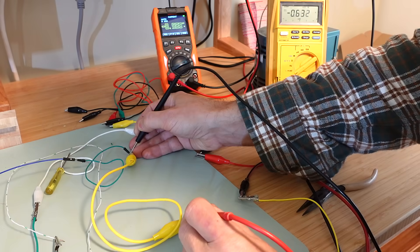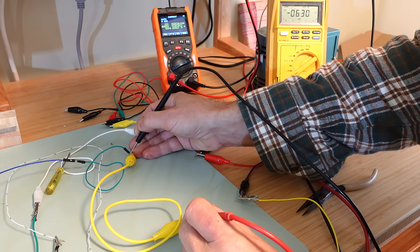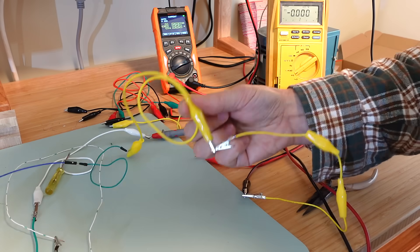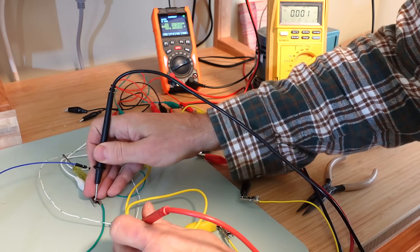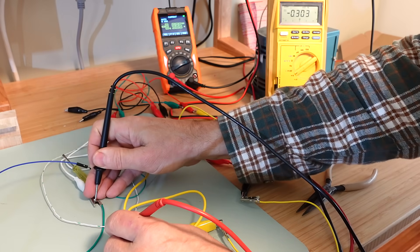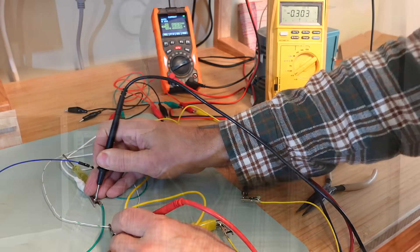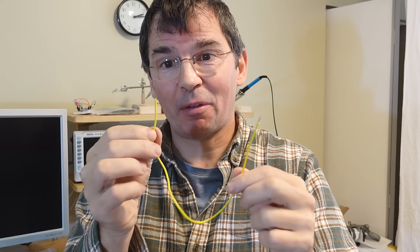This clip lead reads 0.63 volts. So, that's to say this clip lead has got 0.63 ohms. And, the green one that I soldered has got 0.3 ohms. So, that wire is probably about 0.3 ohms.